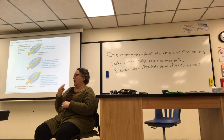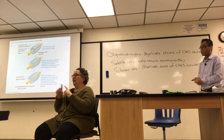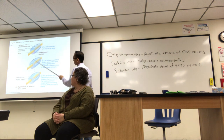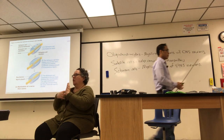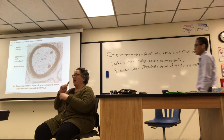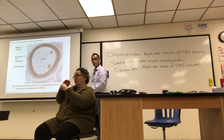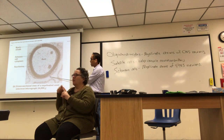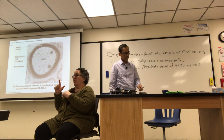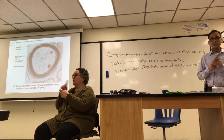Schwann cells myelinate the axons of PNS neurons. The neuron shown on the slide is sensory — unipolar is what we called it. This is the process of myelination: it's essentially multiple layers of cell membrane wrapped around a segment of an axon. The gaps between these myelin sheaths are called the nodes of Ranvier — R-A-N-V-I-E-R.